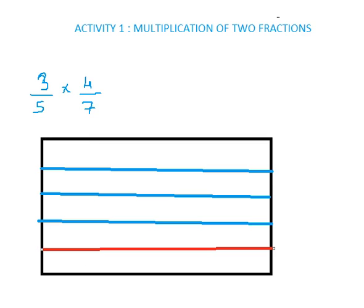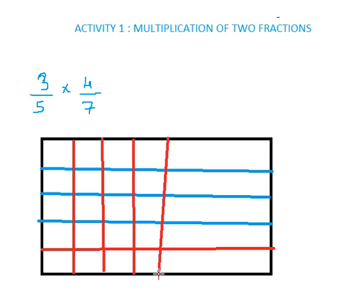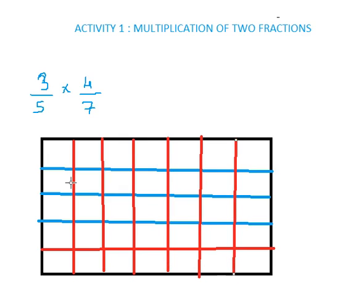Now consider the second fraction. The denominator is 7, so we need to divide that into 7 equal parts. In the first fraction 3 by 5, I should have shaded 3 parts out of 5 parts. That I am going to shade in the latter stage. Now this rectangle is being divided into 7 parts vertically. Horizontally according to the first fraction 5 parts, and vertically according to the second fraction 7 equal parts.